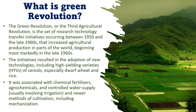These improved seeds were instrumental in boosting Mexico's wheat production and averted famine in India and Pakistan. The initiatives resulted in the adoption of new technologies including high-yielding varieties of cereals like wheat, maize, and rice — especially dwarf varieties of wheat and rice — associated with chemical fertilizers, agrochemicals, controlled water supply involving surface irrigation, and newer methods of cultivation including mechanization.